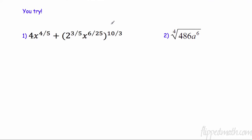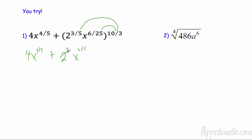Let's take a look at 4x to the four fifths. Nothing I can do there, but I'm going to apply power-to-power to the other term: three fifths times ten thirds is two, so that term becomes x to the two — wait, it's actually four fifths. Two squared is four, so now I have like terms: four plus four is eight, giving 8x to the four fifths.